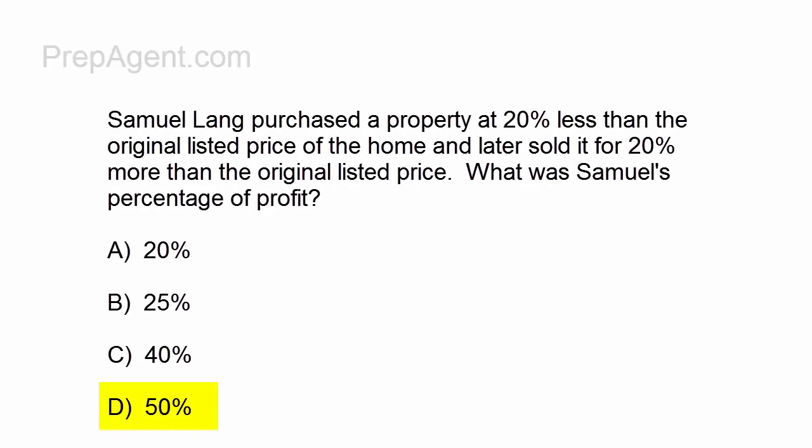So there it is — Samuel's percentage of profit was 50%. How many of you got that right? Hope you understood this and that it makes sense. This is another work of Art at prepagent.com — thanks for giving me a great opportunity to see you.